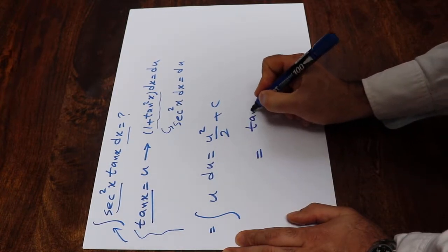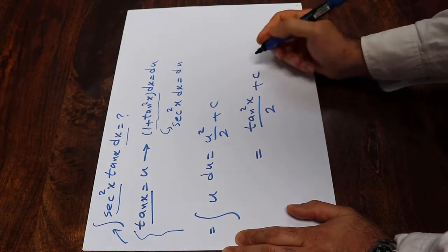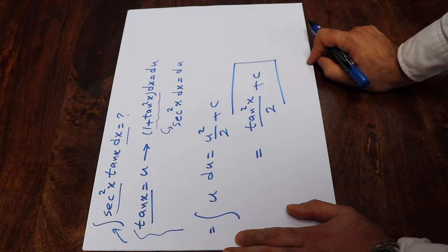So therefore this will be equal to tangent squared x divided by 2 plus c, which is the constant of the integral. And this is the solution to our integral.